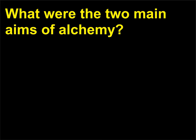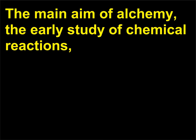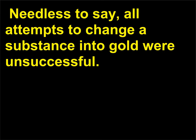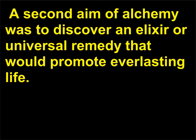What were the two main aims of alchemy? The early study of chemical reactions sought the transmutation, or transformation, of common elements into gold. Needless to say, all attempts to change a substance into gold were unsuccessful. A second aim of alchemy was to discover an elixir or universal remedy that would promote everlasting life; again, this pursuit was unsuccessful.